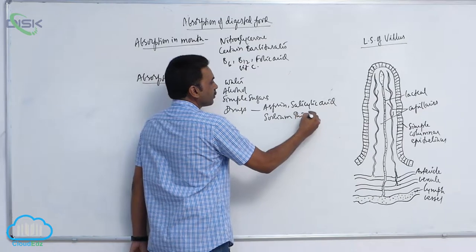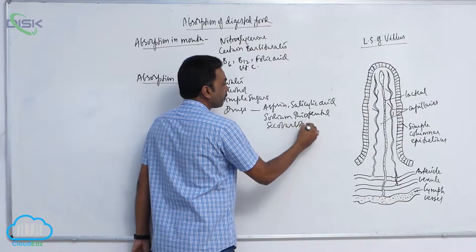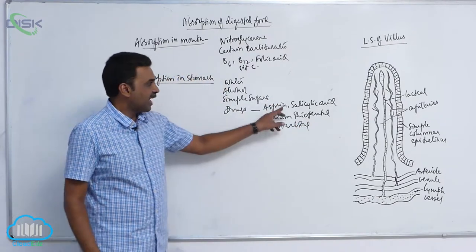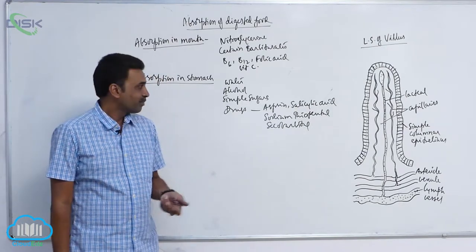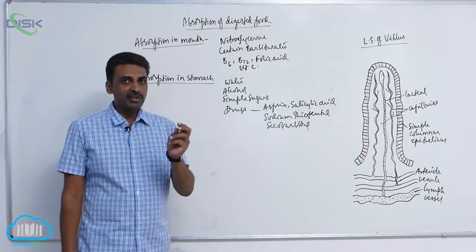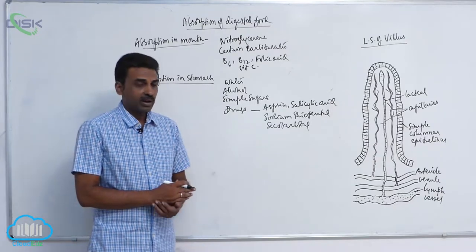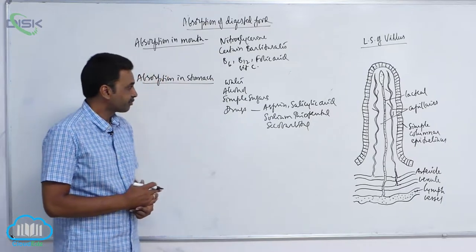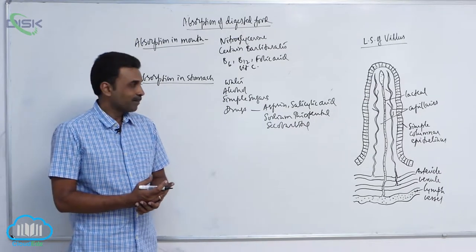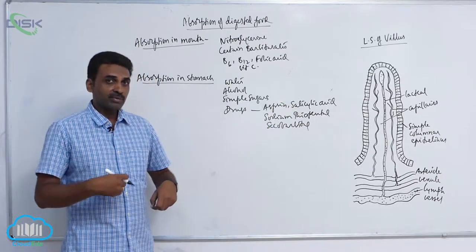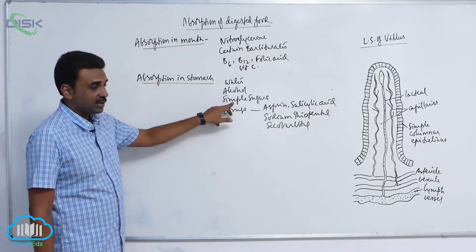Other drugs absorbed in the stomach include sodium thiopentyl and secobarbital. Aspirin and salicylic acid are used to cure fever and inflammation. Sodium thiopentyl and secobarbital are used as sedatives to induce sleep, and sodium thiopentyl is also used as an anesthetic.